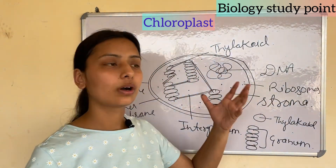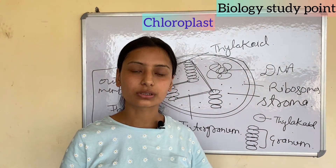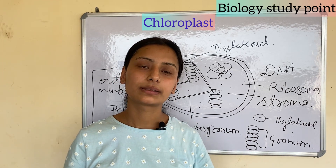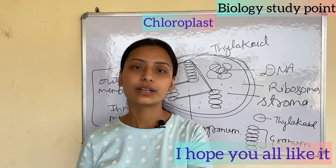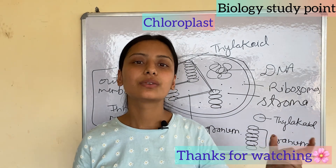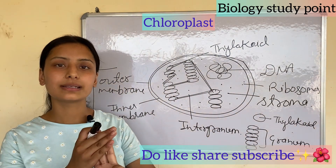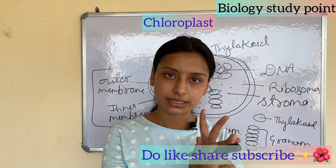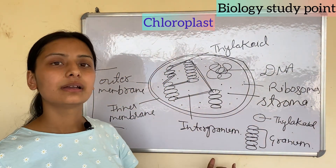To summarize: chloroplast has a diameter of 4-6 micrometers, is visible under a microscope, and is present in photosynthetic cells. It contains the green pigment chlorophyll, which makes plants green and enables them to absorb sunlight. The three main parts of chloroplast are the envelope, thylakoid, and stroma. Thank you.